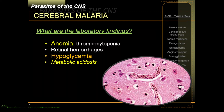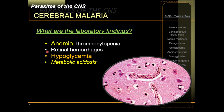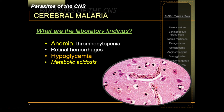Laboratory findings associated with cerebral malaria include anemia and sometimes thrombocytopenia. Severe malaria specifically causes hypoglycemia and metabolic acidosis. A histopathologic slide shows clumped parasitized red blood cells blocking the lumen of cerebral capillaries — sticky Plasmodium falciparum-infected red blood cells causing mechanical obstruction in the brain.